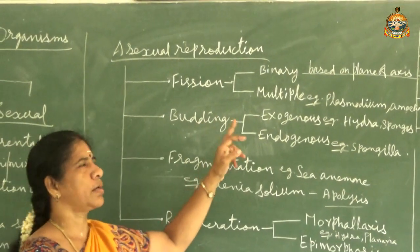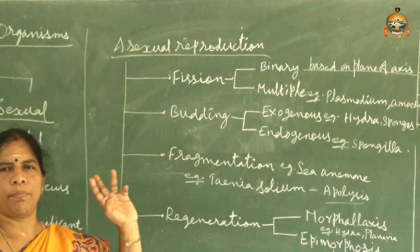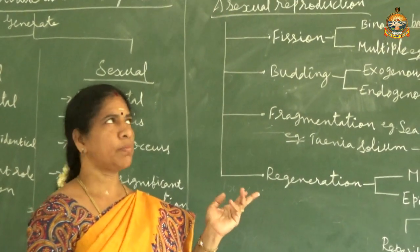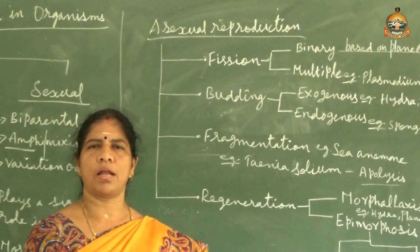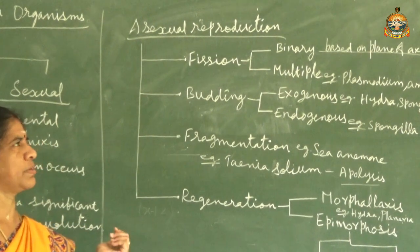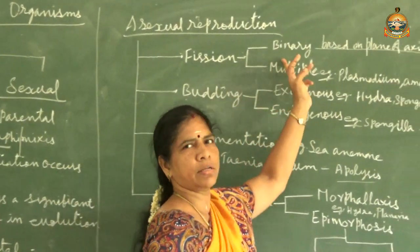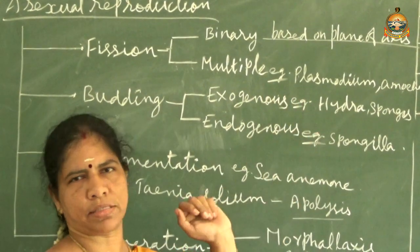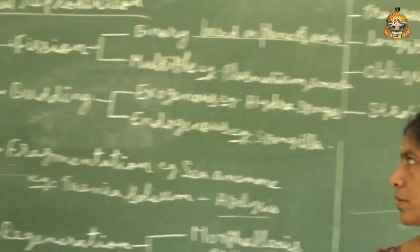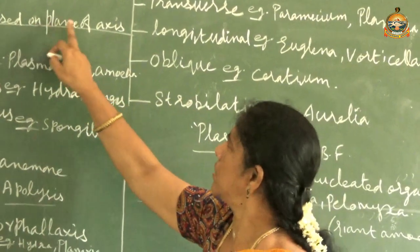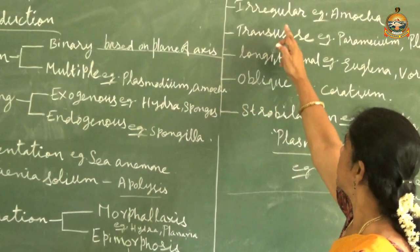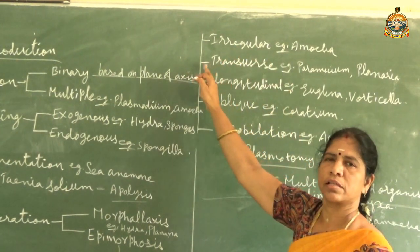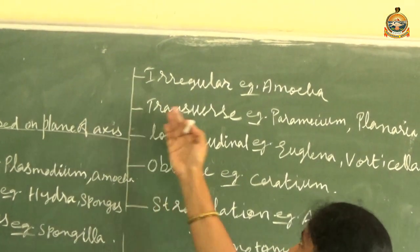Multiple fission means the parent body divides and produces a number of daughter cells. Binary fission is divided into many categories based on the plane of the axis of division. The first type is irregular binary fission, also called simple binary fission, which takes place in Amoeba.